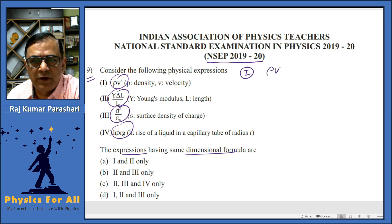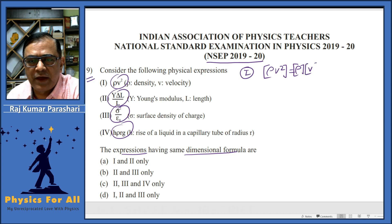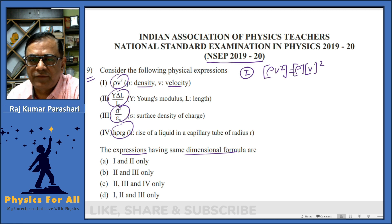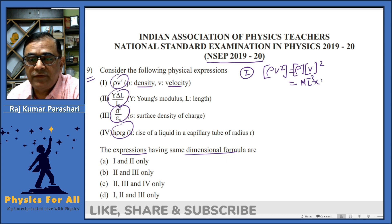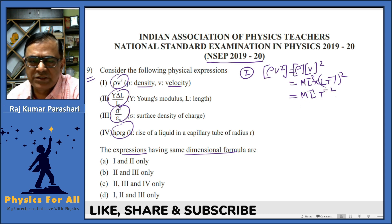Dimensional formula of ρv². This is the same as the dimensional formula of ρ multiplied by the dimensional formula of v². Rho is density and v is velocity. Density is M L⁻³ and velocity is (L T⁻¹)², so this equals M L⁻¹ T⁻², which is the dimensional formula of pressure.